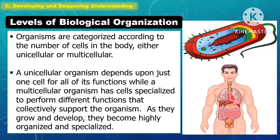Organisms are categorized according to the number of cells in the body. It's either unicellular or multicellular. A unicellular organism depends upon just one cell for all of its functions, while a multicellular organism has cells specialized to perform different functions that collectively support the organism.